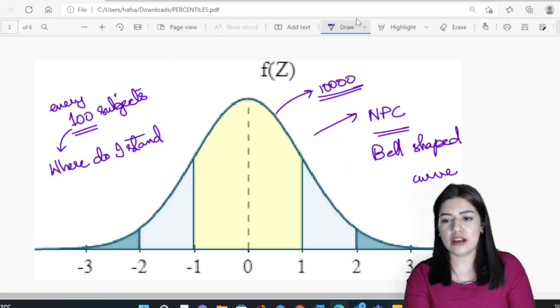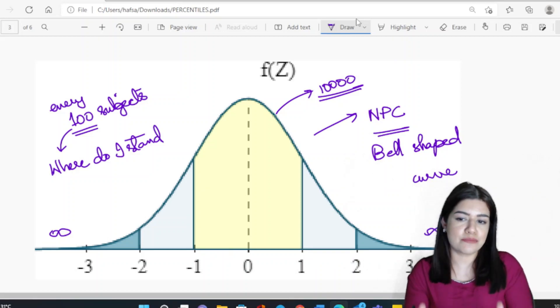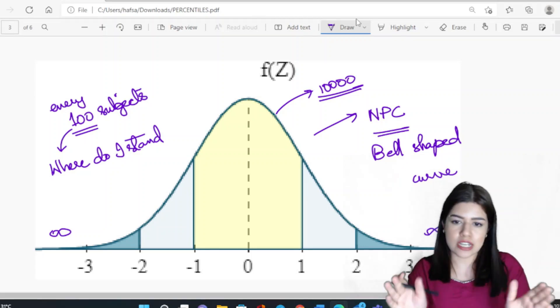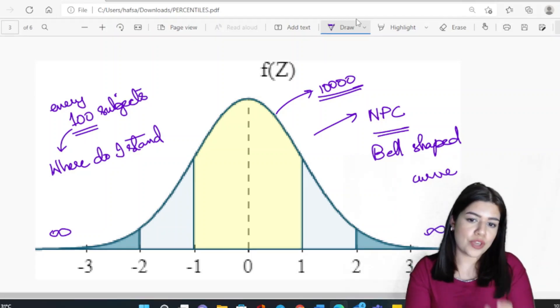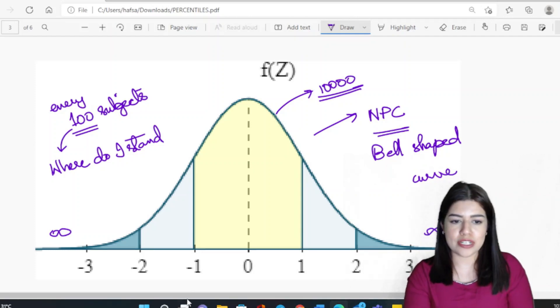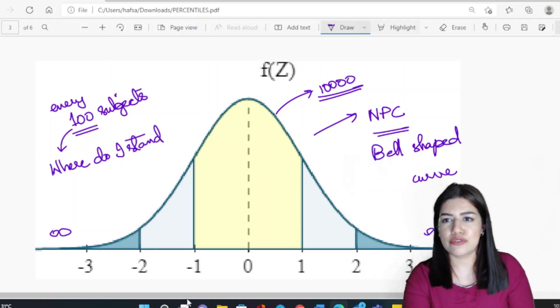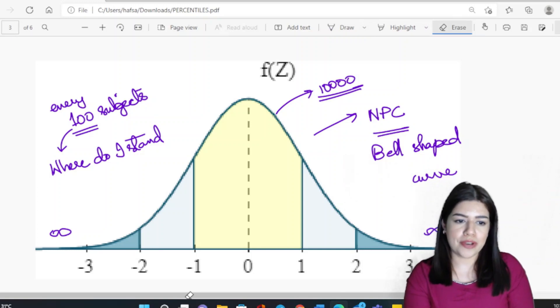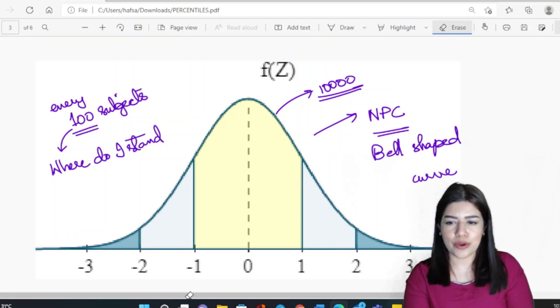For the normal probability curve for the population, we know that we have an infinity on the right and infinity on the left. It's basically asymptotic where the x-axis isn't touched by the curve. But here we are talking about the sample where we have all of our data, so it might be confusing how for the population it lines up to 99.7 percent, but for the sample we will have all 100 percent of the data.